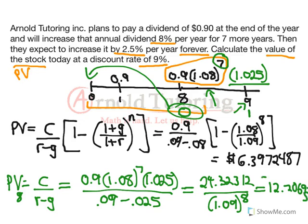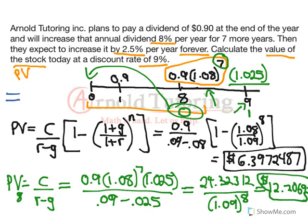So we've got our two pieces: the present value of the first 8 years of dividends, and the present value of the time 9 cash flows forward — both discounted back to time 0. Our final answer is just adding those two together. Don't round until the end — the stock value is $18.60. It's a pretty great company, so I'd expect it to be a pretty high number like that.